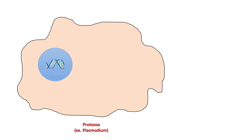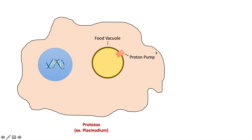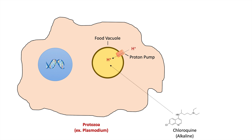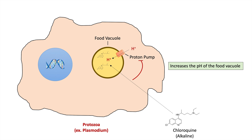So what is the mechanism of action of hydroxychloroquine and chloroquine in a protozoa like plasmodium? Plasmodium, like other protozoa, have a food vacuole they use to digest their nutrients. These food vacuoles have a proton pump that brings in hydrogen ions, acidifying the food vacuole. Chloroquine and hydroxychloroquine are both alkaline, so when chloroquine enters the food vacuole, it can alkalinize it and also inhibit proton pump function, increasing the pH and preventing the food vacuole from digesting the nutrients required for the protozoa — essentially starving it.